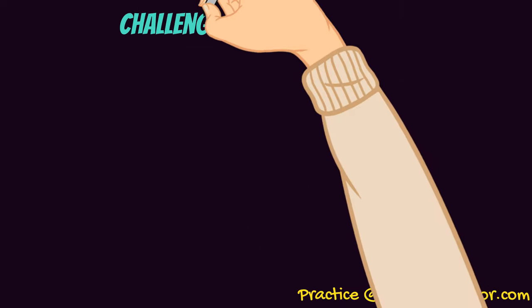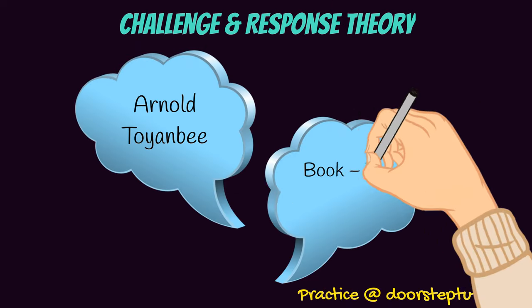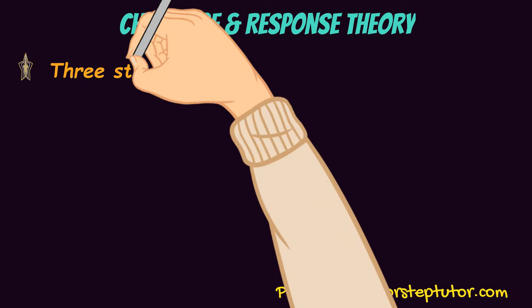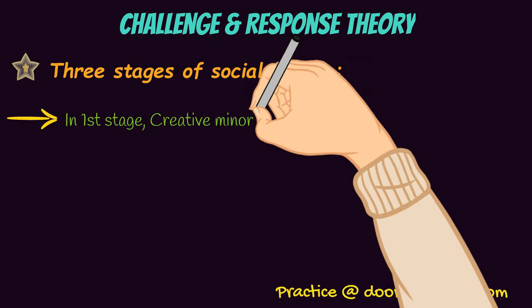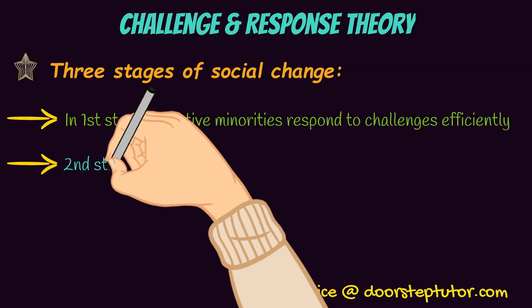Next is the challenge and response theory given by Arnold Toynbee in his book, 'The History of Man.' He said that there are three stages of social change. In the first stage, where there are a lot of problems in the world, some people who are very rational, very creative, and have a lot of ideas — known as creative minorities — respond to those challenges very efficiently, and the society comes out of that challenge.